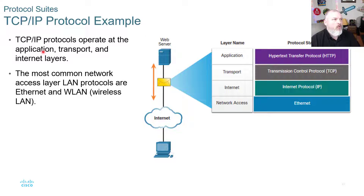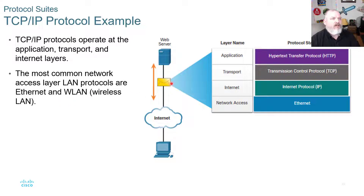TCP/IP protocol example: TCP/IP protocols operate at the application, transport, and internet layers. The most common network access layer LAN protocols are Ethernet and WLAN — wireless LAN. Ethernet uses cables you plug in; wireless LAN connects from your devices. Looking at a packet being sent from a web server to an end host across the internet: the application is HTTP, indicating it's a web page; the transport is TCP; the internet protocol is IP; and it's sent across a copper Ethernet cable.